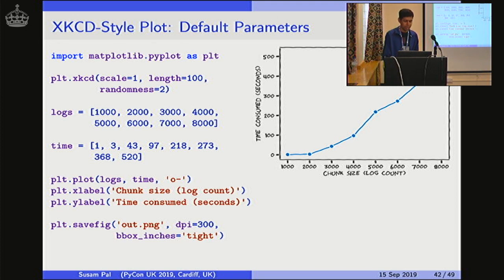There are a couple of ways to customize an XKCD style plot. These are the three keyword arguments it takes. Scale, length and randomness. Scale stands for the amplitude of each wiggle. Length is the length of each wiggle. And randomness is the randomness in the length of each wiggle.